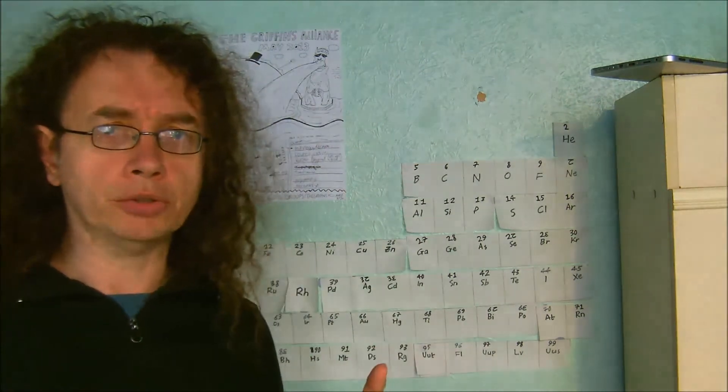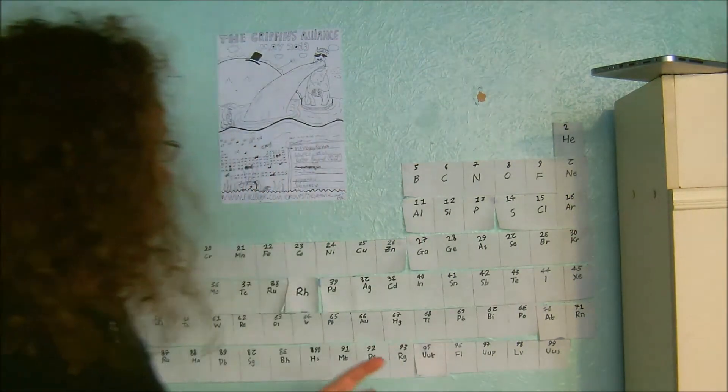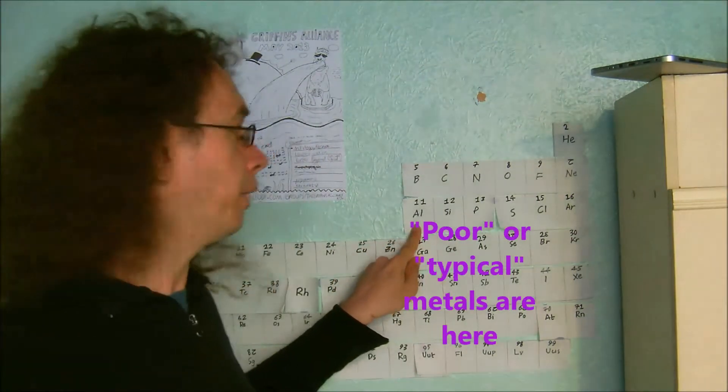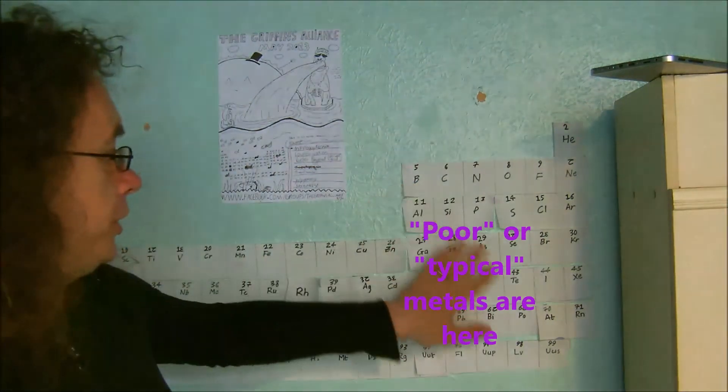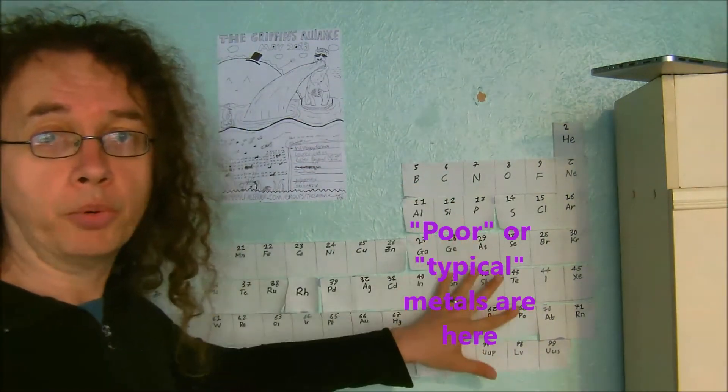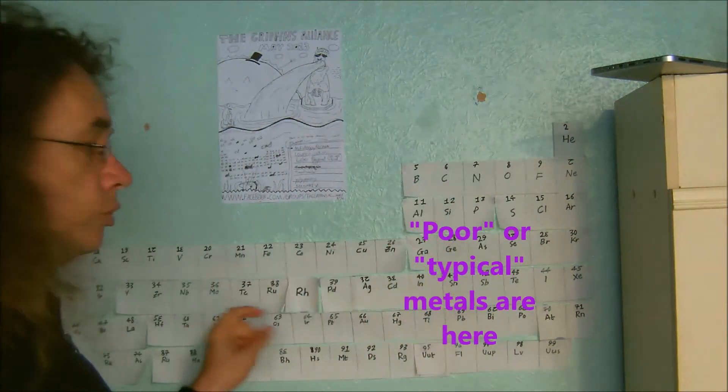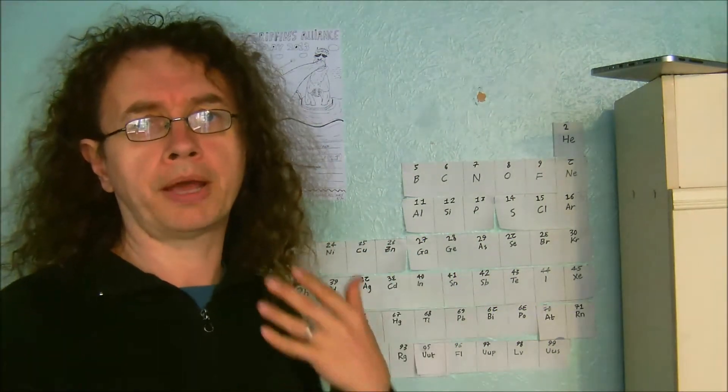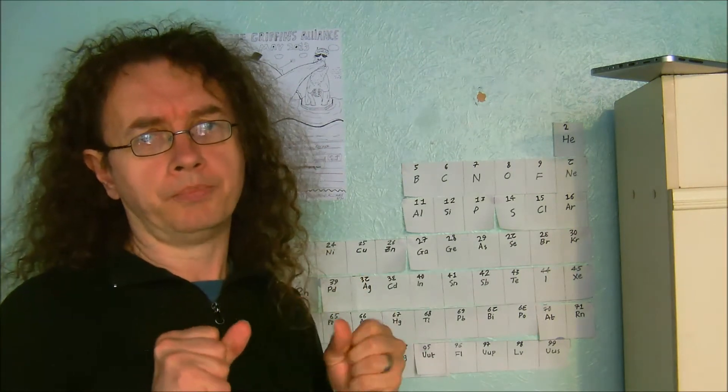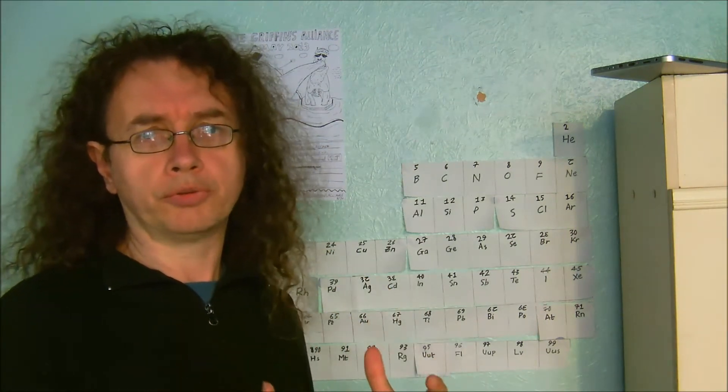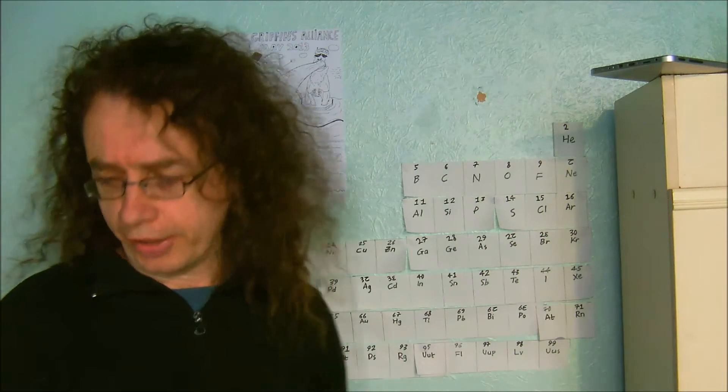The least reactive metal which is actually extracted by electrolysis is aluminium, which is what's known as a poor metal or a typical metal, because it's on this side of the periodic table. These are not transition metals. Transition metals form colored compounds, are hard, tend to be dense, are resistant to corrosion, and are generally quite useful for structural purposes. Aluminium is not like that.